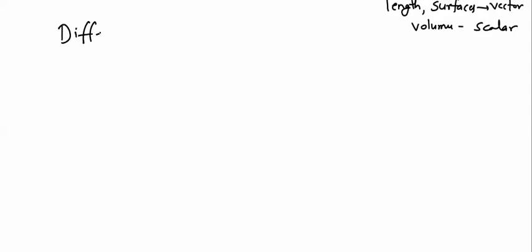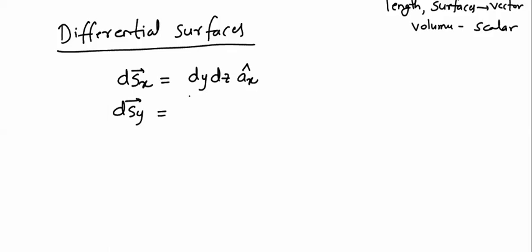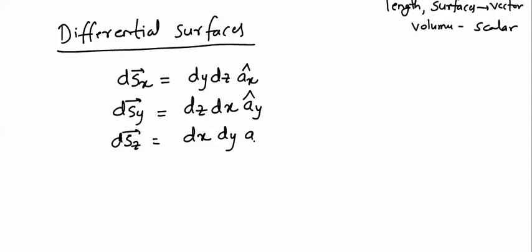Next, we consider differential surfaces. For an X-constant surface, DSX = DY·DZ·AX. For a Y-constant surface, DSY = DZ·DX·AY. And DSZ = DX·DY·AZ. This is all about Cartesian coordinate system. You might have studied Cartesian coordinate system many times, but not in this detail.